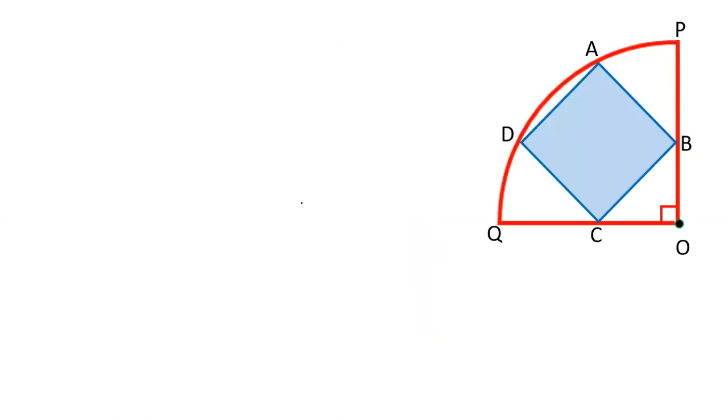Let's see how we can solve this question. To start with, join O to A and A to C. Draw this construction. Now AC is the diagonal of the square. The side of square is √5.